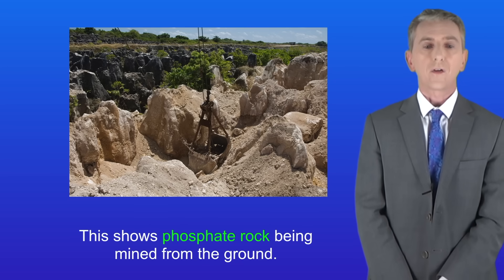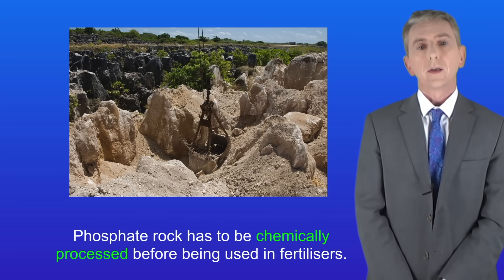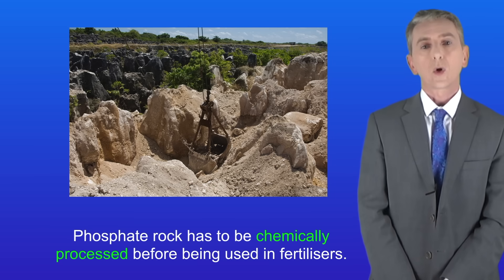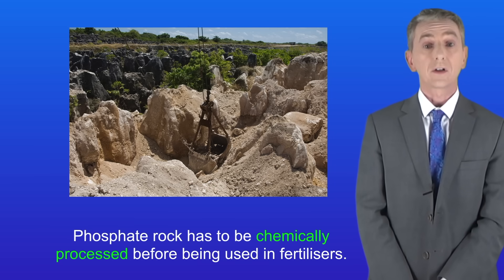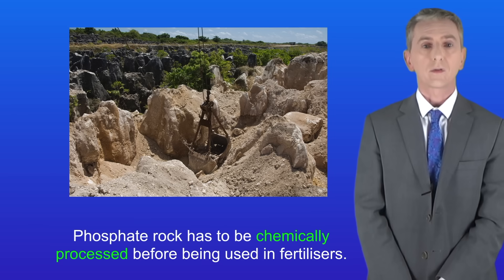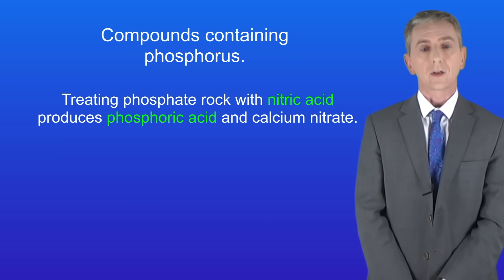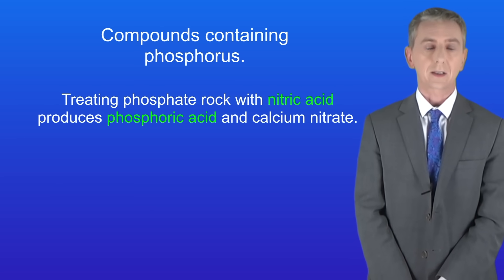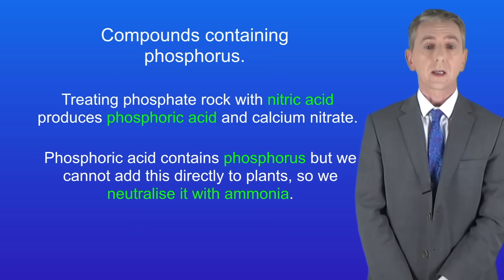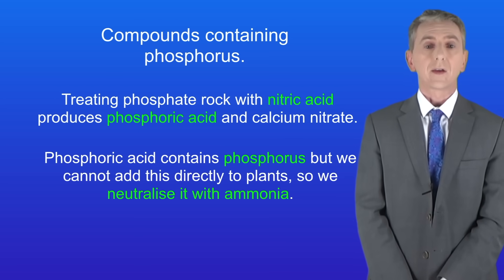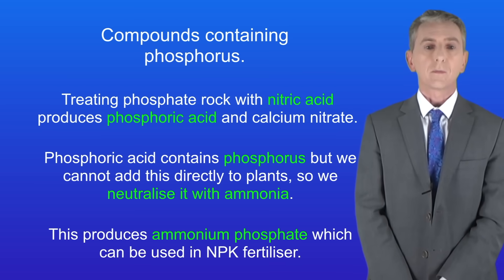Phosphate rock is mined from the ground but has to be chemically processed before being used in fertilizers. We're going to look at how phosphate rock is treated with nitric acid, sulfuric acid, and with phosphoric acid — this contains a lot of detail and you do need to learn it. Treating phosphate rock with nitric acid produces phosphoric acid and calcium nitrate. Since we cannot add phosphoric acid directly to plants, we neutralize it with ammonia to produce ammonium phosphate, which can be used in NPK fertilizer.